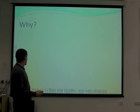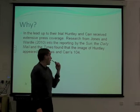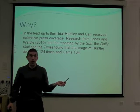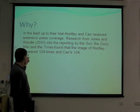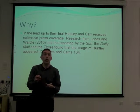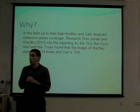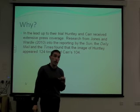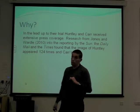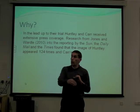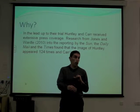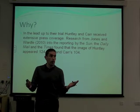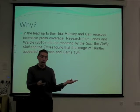In the lead-up to the trial, Huntley and Carr received extensive press coverage. Research from Jones and Wardle illustrates the amount of coverage these two people received — they investigated reports from the Sun, the Daily Mail, and the Times in the months leading up to the trial. Overall, Huntley's image appeared 124 times in these newspapers; Maxine Carr's appeared 104 times. Huntley was charged with two counts of murder; Maxine Carr was charged with conspiring to pervert the course of justice. So even though there's a massive distinction in the crimes charged, they received equal treatment in the build-up to the trial.